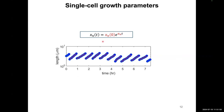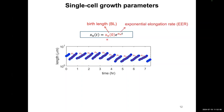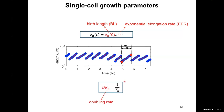From these measurements we can fit each generation to the equation x = x₀ · e^(αt), where x₀ is the birth length. We measure birth length (BL) for each generation n, the slope of the line alpha as the exponential elongation rate (EER), and the inverse of the time per generation, which is the doubling rate (DR).